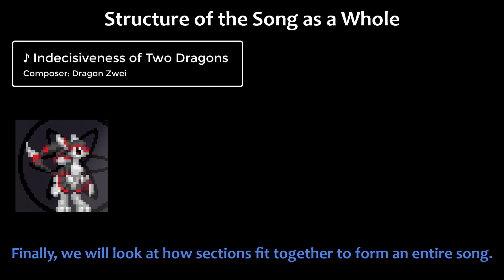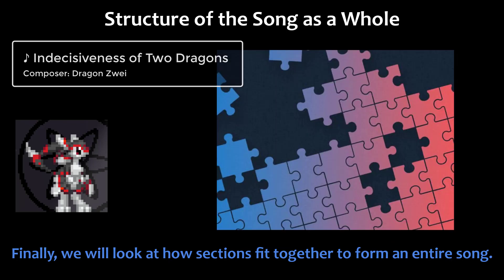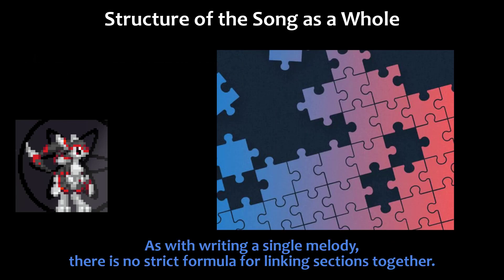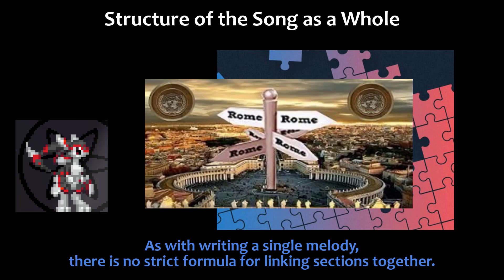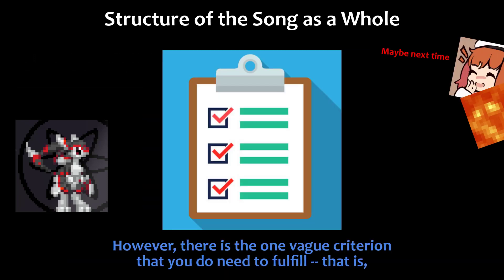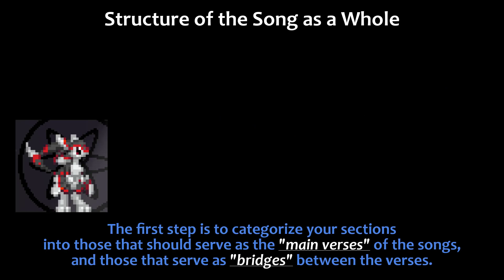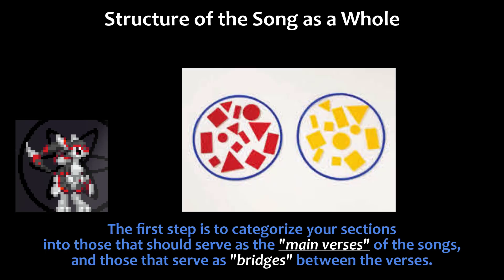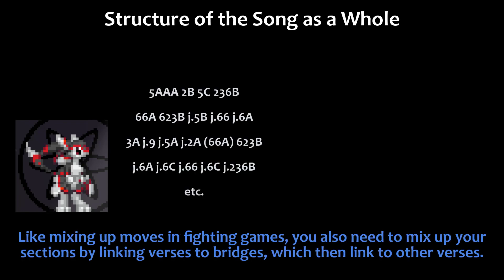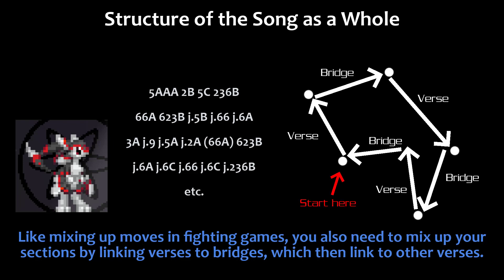Finally, we will look at how sections fit together to form an entire song. As with writing a single melody, there is no strict formula for linking sections together. However, there is one vague criterion you need to fulfill: make your song flow well. The first step is to categorize your sections into those that serve as the main verses of the song, and those that serve as bridges between the verses. Like mixing up moves in fighting games, you need to mix up your sections by linking verses to bridges, which then link to other verses.